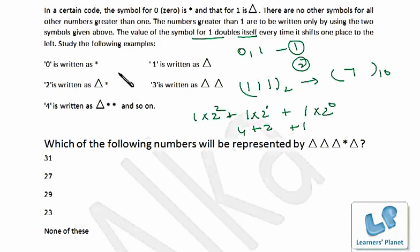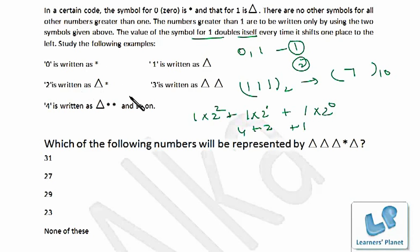We are 100% sure this is binary number system. They have represented 0 as star and 1 as delta — that's not a difficult thing to crack. One more important thing: whatever conclusion you draw from the comprehension, note it down, because there are five questions based on it. Once you are clear about the decodings, all five questions will be done very easily.